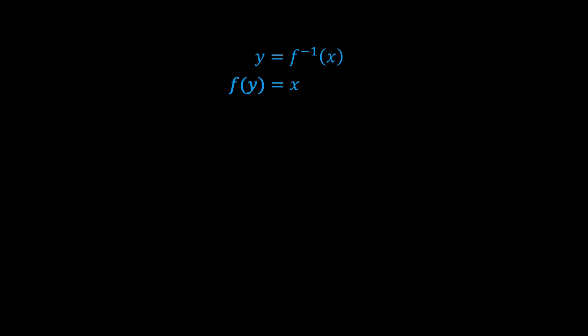Next, we differentiate with respect to y, because that way we're differentiating with respect to the input of f. Notice that dx dy is 1 over dy dx. So we take the reciprocal and get dy dx equals 1 over f prime of y.